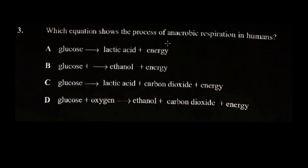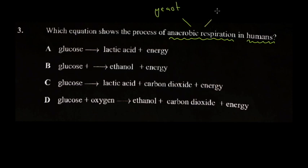Question three asks which equation shows the process of anaerobic respiration in humans. The key phrases here are anaerobic respiration and in humans. This can also happen in yeast and other microorganisms. Anaerobic respiration means these processes happen in the absence of oxygen. That is the only thing common between them — but there are some differences, and these differences reflect in the equations.